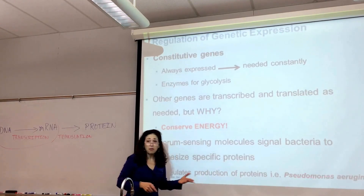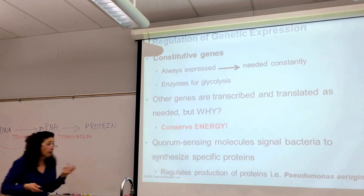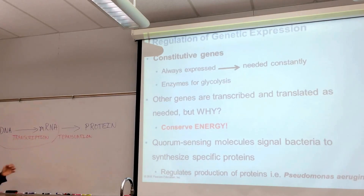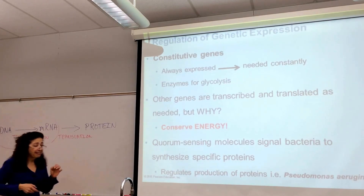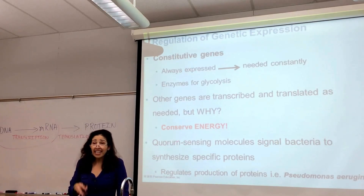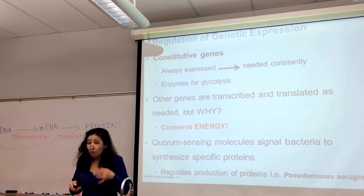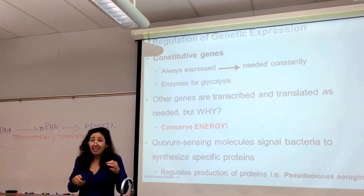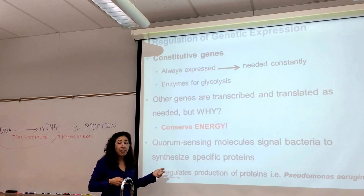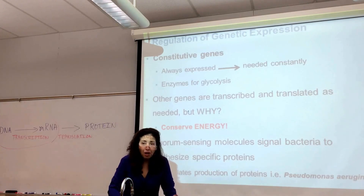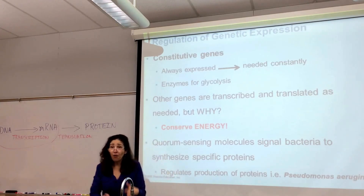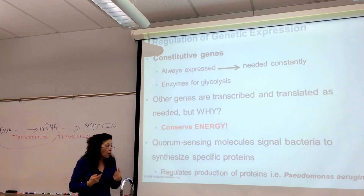One example is Pseudomonas aeruginosa in individuals that have wounds. What Pseudomonas aeruginosa does is sense its environment using quorum sensing molecules. Once it notices there are a lot of other bacteria like itself present, then and only then will it start making those harmful proteins in order to affect us.